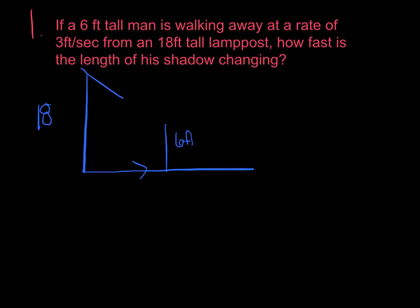And I'm going to continue and create my triangle here. How fast, so I'm looking for a rate, is the length of his shadow changing? So I'll come back to that in a moment. Now, it's probably just easier if I give some variables to things here. I'm going to say the distance between the lamppost and the man, and I'm going to call that x.